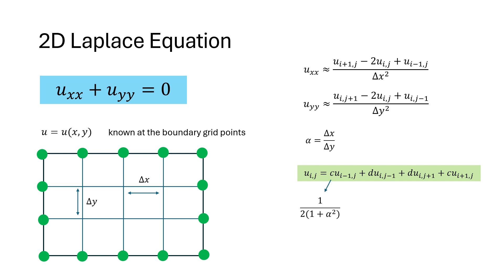Here, c equals 1 by 2(1 plus alpha squared) and d equals alpha squared divided by 2(1 plus alpha squared).